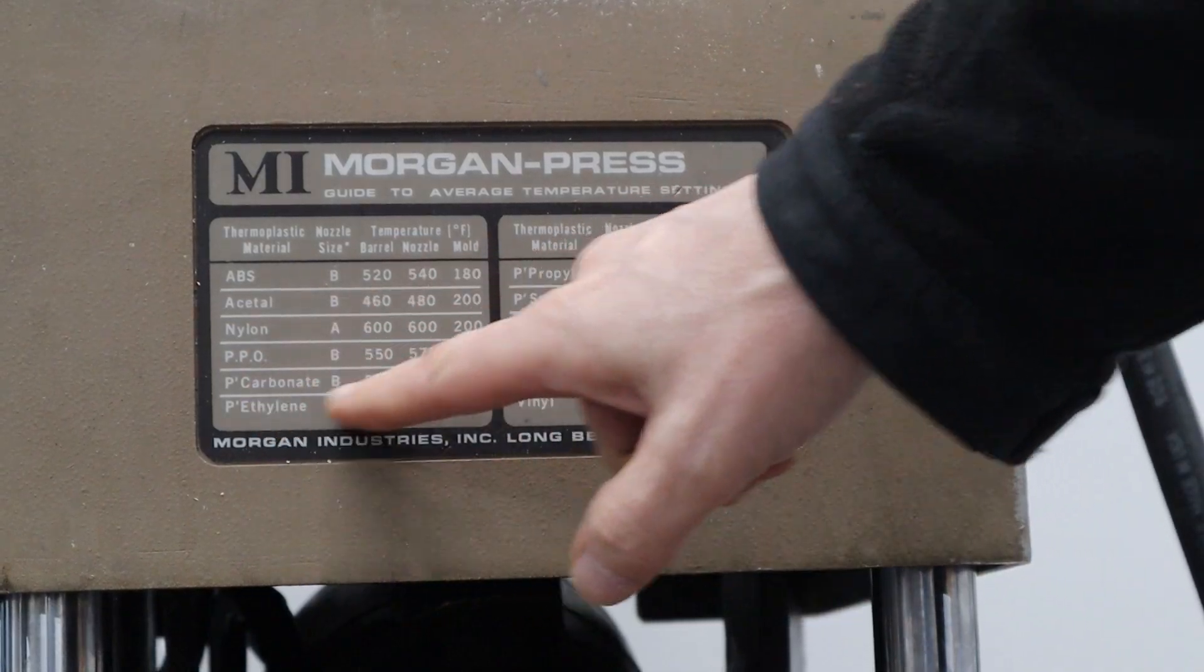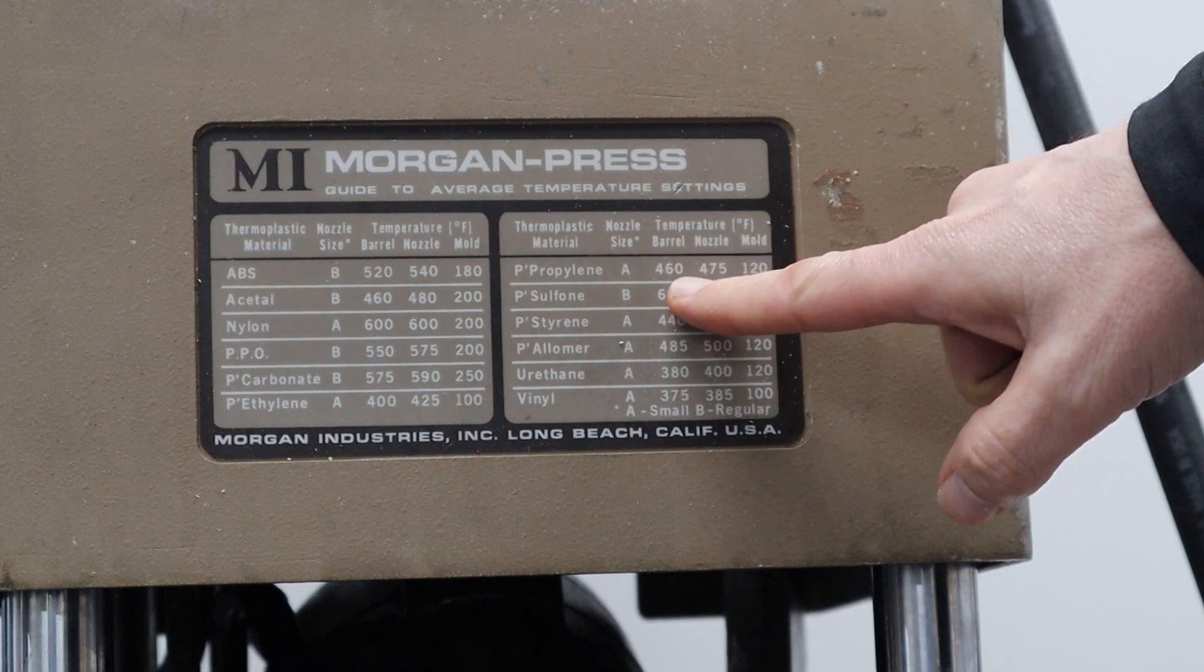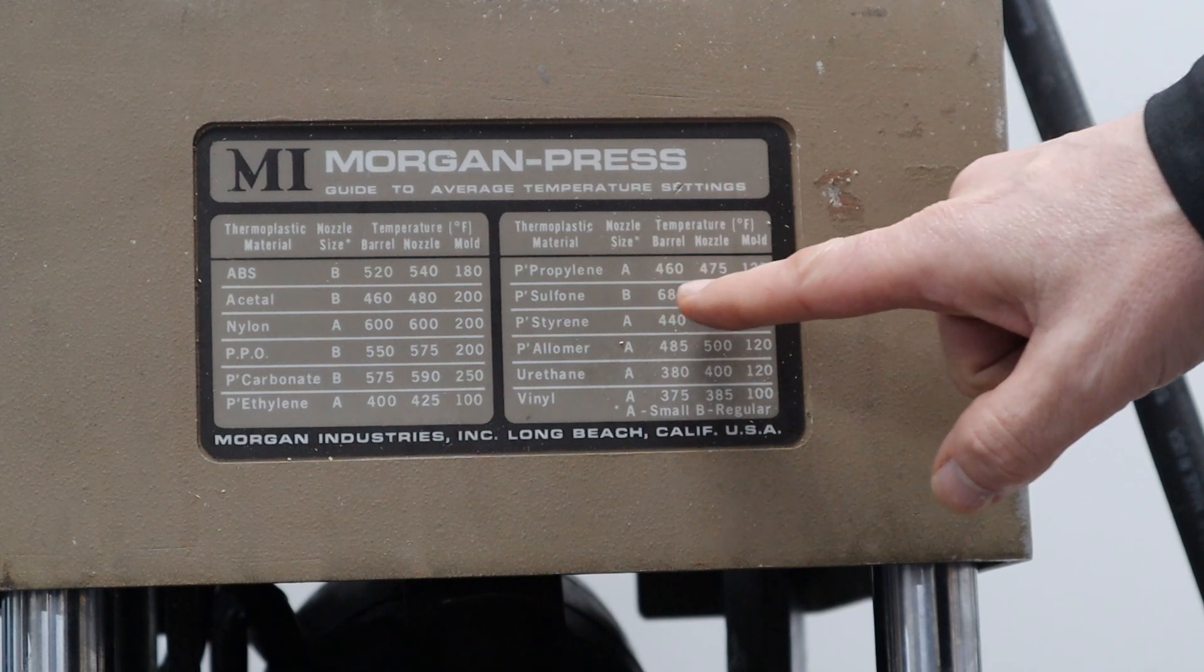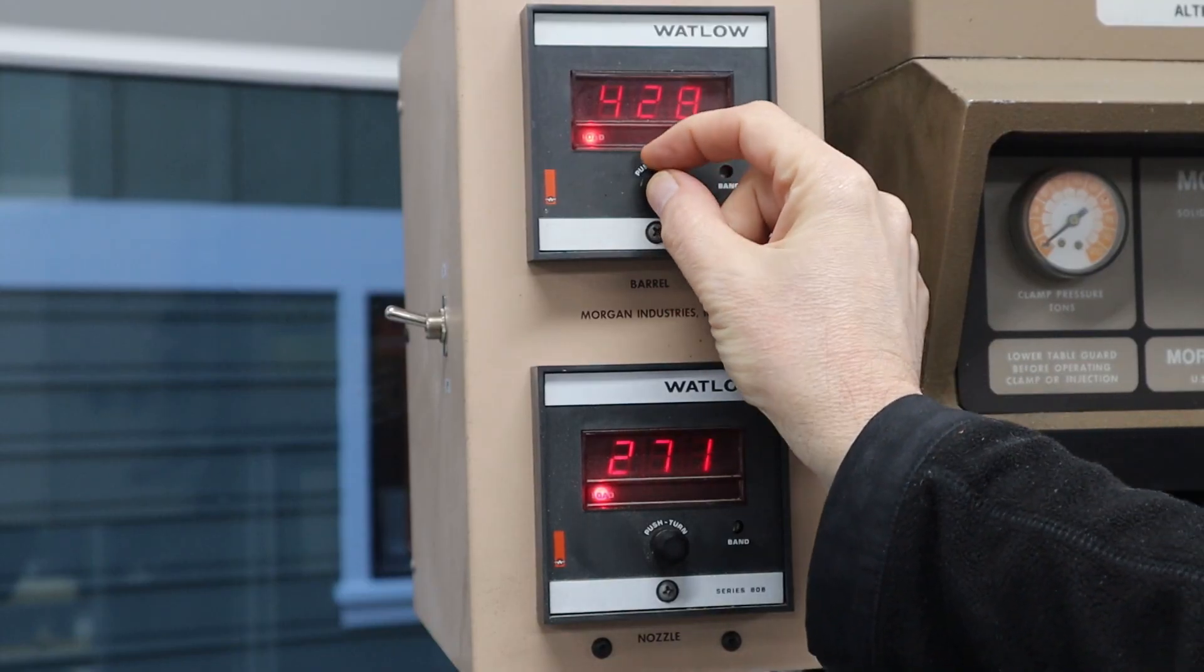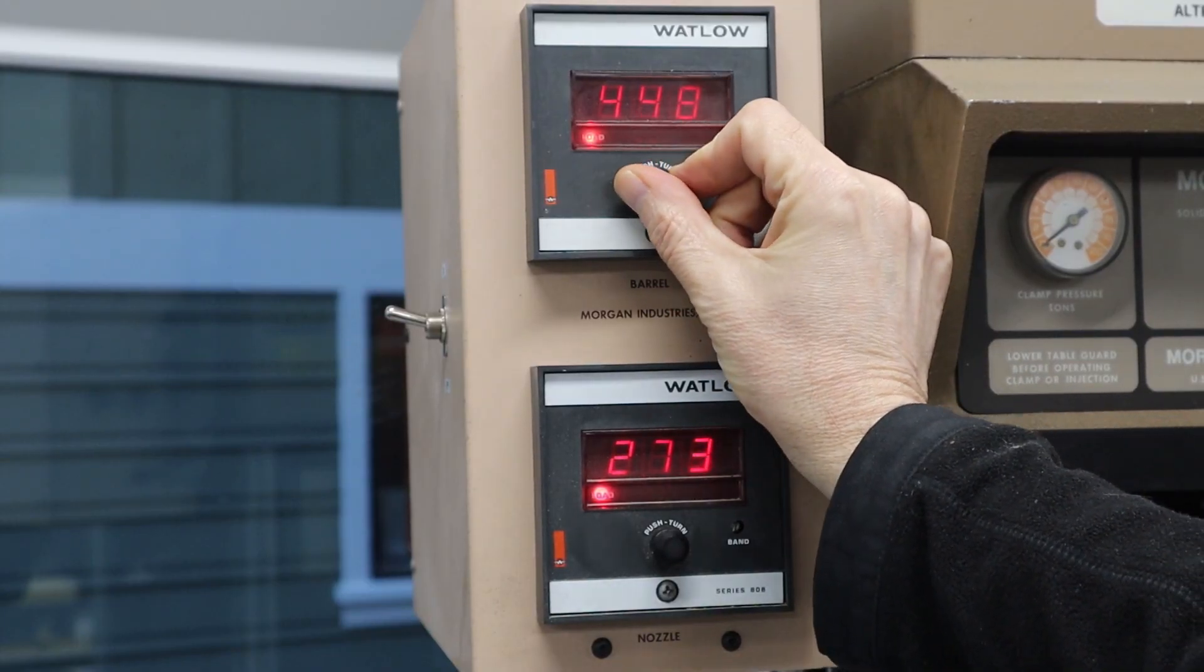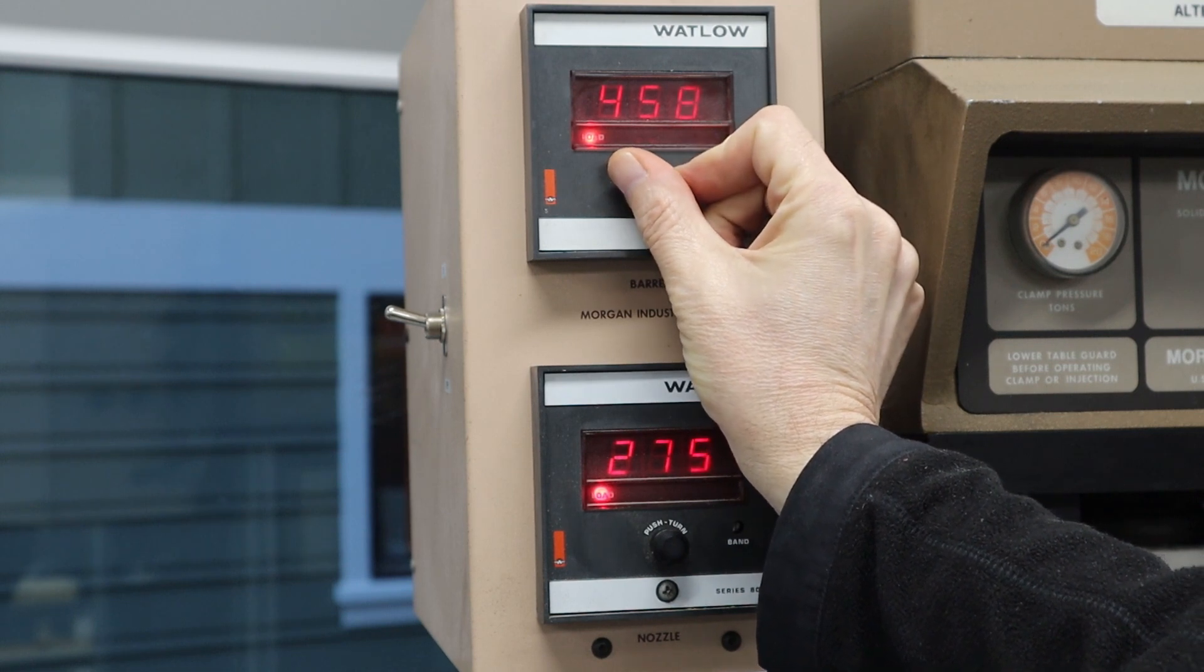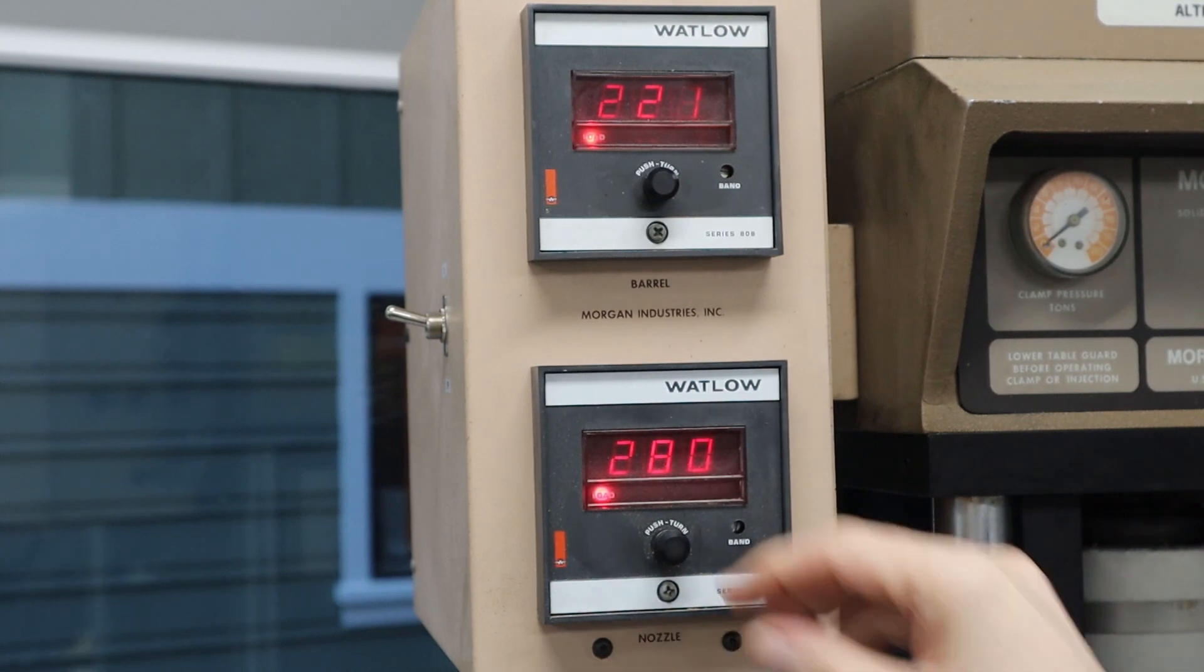And there's probably a better way of doing this, so I'll have to read the manual again. Here's a chart that shows the different materials. And as you can see down here is polypropylene. And it's actually suggesting 460 for the barrel temperature and 475 for the nozzle temperature. So if I press this in, I can change it to 460.